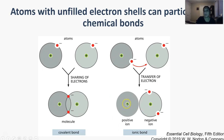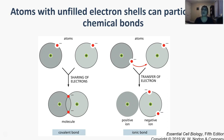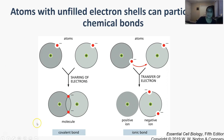Both covalent and ionic bonding lead to the same end — they are trying to get to a stable state. It depends on whether the interaction happens through commingling of two electron shells to share electrons and create a covalent bond, or through complete separation into ionic bonds. The elements of the human body reside mostly in the top half of the periodic table — you don't have these really heavy elements. Most of the ones present are going to be these key ones.